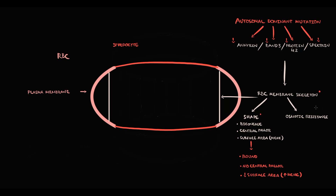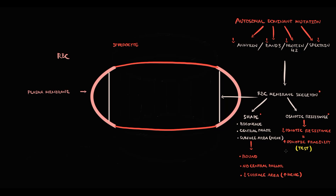As a result, this causes an increase in mean corpuscular hemoglobin concentration. The second feature is that with disruption of the red blood cell cytoskeleton, the osmotic resistance of red blood cells decreases, and this causes increased osmotic fragility that we can determine by a specific test.